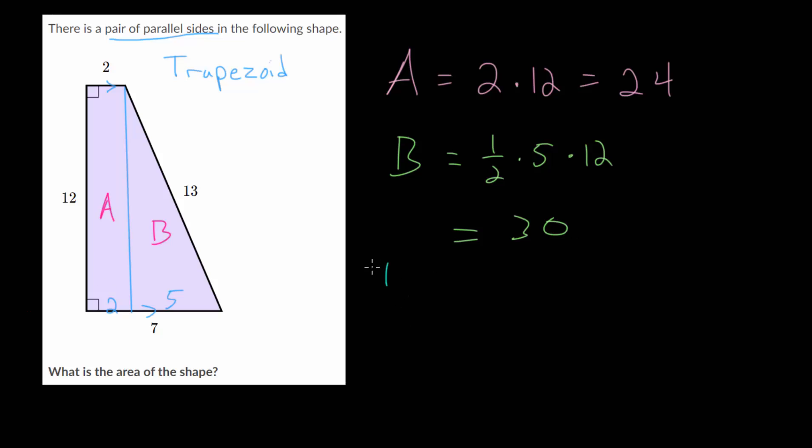So we can find our total area, which is just the sum of the two pieces, A and B. So that's 30 plus 24, which is 54. And we can just say this is square units, since we weren't told any specific units.